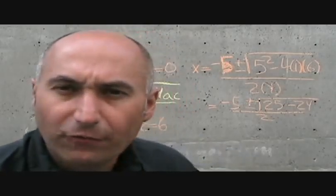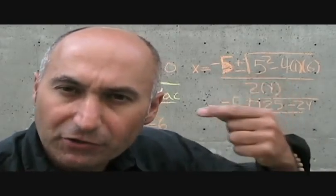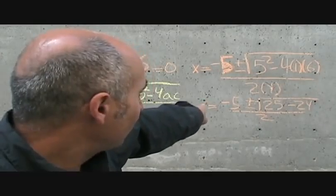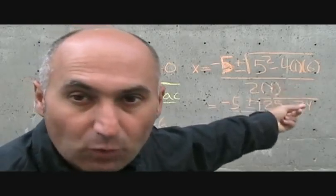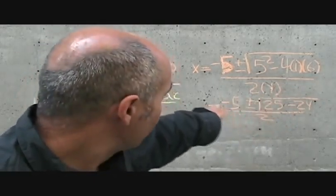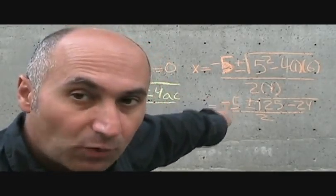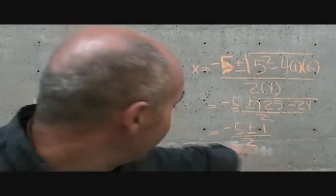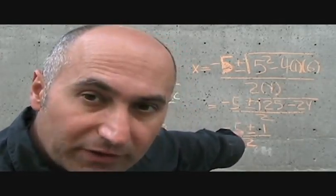Now we just simplify. When using the quadratic formula, just write x equals and work downward. We get negative 5 plus or minus the square root of 25 minus 24, which is the square root of 1, which is just 1. So x equals negative 5 plus or minus 1, divided by 2.